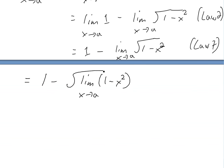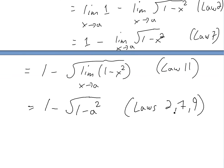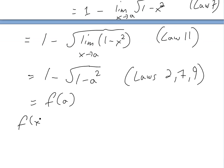Now inside the square root we have the limit as x approaches a of (1 - x²). Using law 2 (difference law), law 7 (constant law), and law 9 (power law), we can plug in directly to get 1 - a². So the full expression becomes 1 - √(1 - a²), which is just f(a). Thus the limit equals f(a) for every a where -1 < a < 1, so f is continuous on the interior.